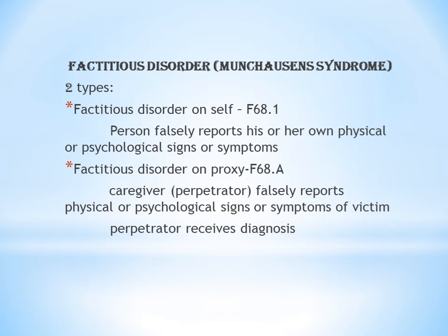The last topic is factitious disorder, otherwise called Munchausen's syndrome. There are two types: factitious disorder on self and factitious disorder on proxy. Factitious disorder on self, coded as F68.1, means a person falsely reports his or her own physical or psychological signs or symptoms — that is, telling the doctor about abnormalities they actually do not have. This is a psychological disorder.